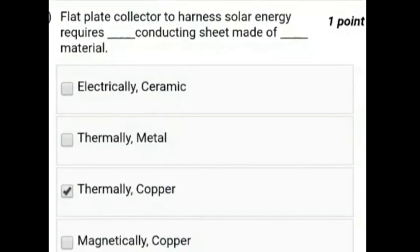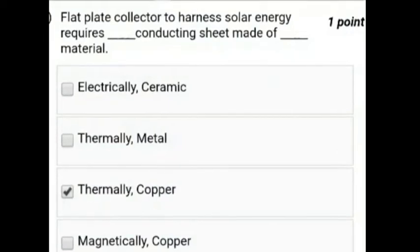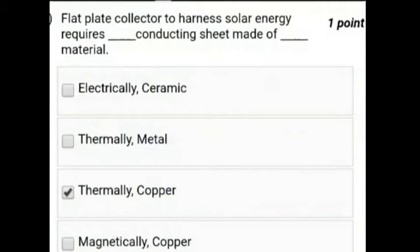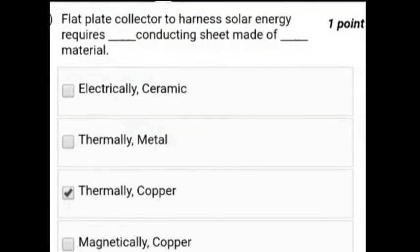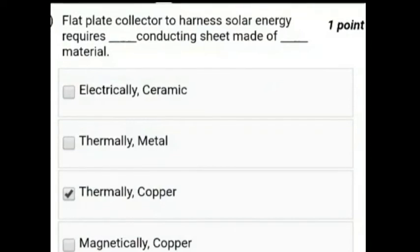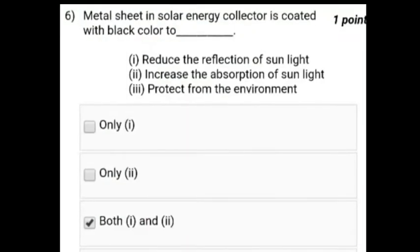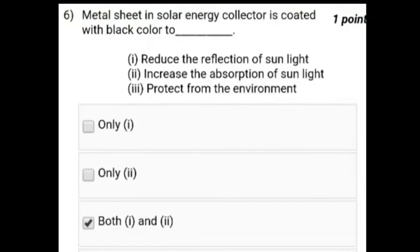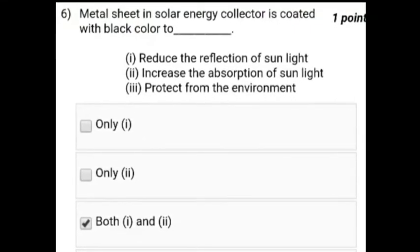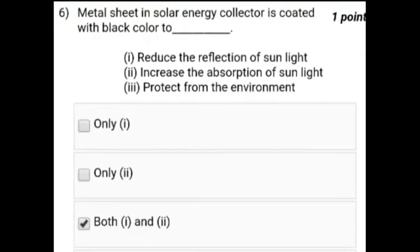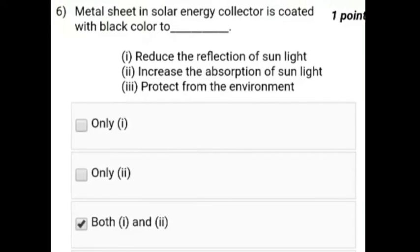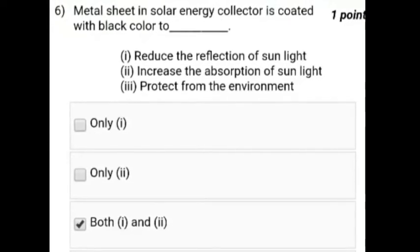And the fifth question is: flat plate collector to harness solar energy requires dash conducting sheet made up of dash material. Thermally copper. And the sixth question is: metal sheet in solar energy collector is coated with black color to reduce the reflection of the sunlight, increase the absorption of the sunlight, and protection from the environment. So the answer will be the first and second.